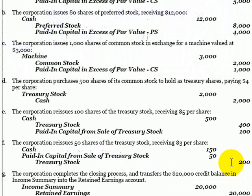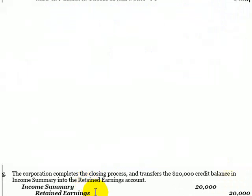When our corporation is ready to do its closing entries, the balance in income summary will be closed. The corporate account used to hold the earned capital of the corporation is the retained earnings account, so income summary will be closed to retained earnings. We have quite an assortment of corporation accounts used to record all of the stockholder equity in the corporation, and when we prepare our balance sheet, they'll all appear in the stockholder equity section.